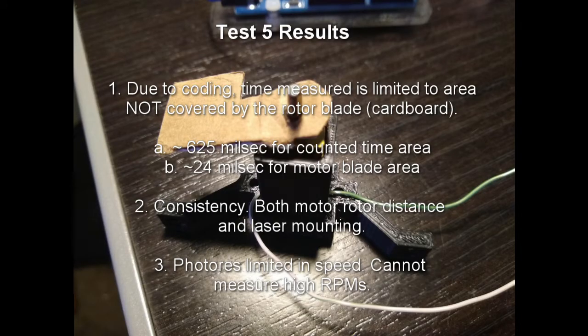So the results in was about 625 ms for the counted time area. That's the blue arrow and 24 ms for the motor blade area, the purple arrow. Other issues were consistency. The motor rotor distance and the laser mounting. If you move any of those or adjust any of those, it could alter your reading slightly. And of course, lastly was the photoresistor is again limited in speed. So higher RPMs will more than likely not give you an accurate reading.